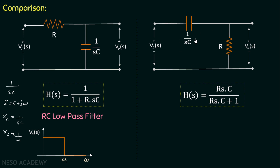In the other circuit where the output is measured across the resistor and the capacitor is in series, if we pass a low-frequency signal the capacitor becomes open-circuited and the input does not reach the output, so the output is zero for low-frequency input. But for high-frequency signal the capacitor acts as a short circuit and output is obtained. Therefore for low frequency the output is zero and for high frequency the output is non-zero.